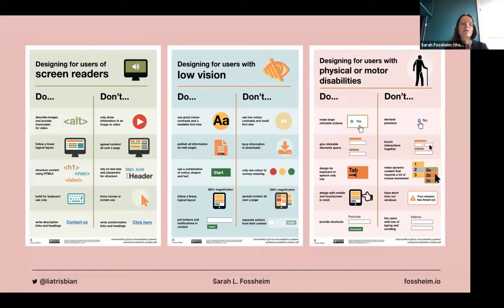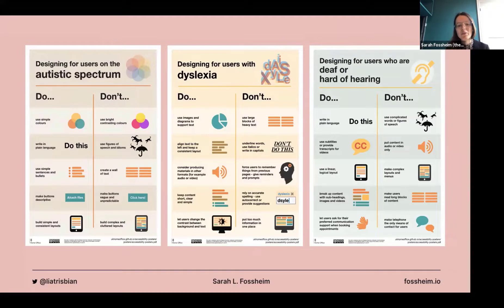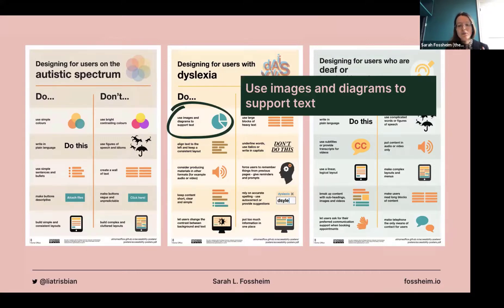I also want to share these posters made by the UK Home Office, which give pointers on how to design for people who use screen readers, people with low vision, physical or motor disabilities, and cognitive and hearing impairments. Importantly, they point out that for people with dyslexia it's good to use diagrams and images to support text — so data viz in itself is already an accessibility measure, which is why it's extra important that we make our data visualizations accessible as well.